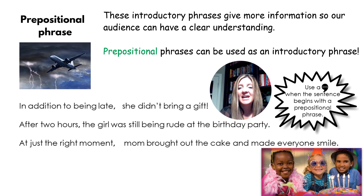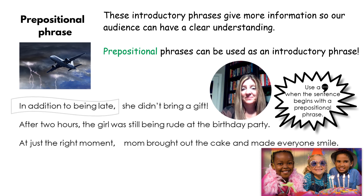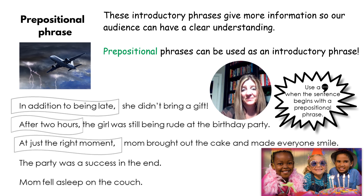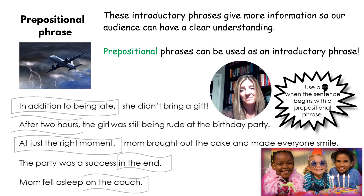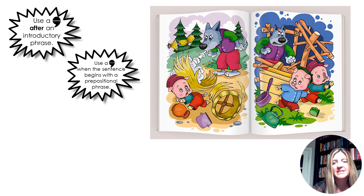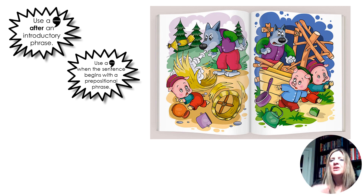'At just the right moment, mom brought out the cake and made everyone smile.' This is again a position of time. We show kids we can take those prepositional phrases out and the sentences still make sense. They can be at the beginning and then you need a comma; they can be at the end and then you don't. Story structure is a great time to practice because it has a beginning, middle, and end — it's chronological. Stories of any kind work well here. For older kids, this would be a great time to say, 'Hey, about that novel we just finished — let's write a summary using introductory phrases.'